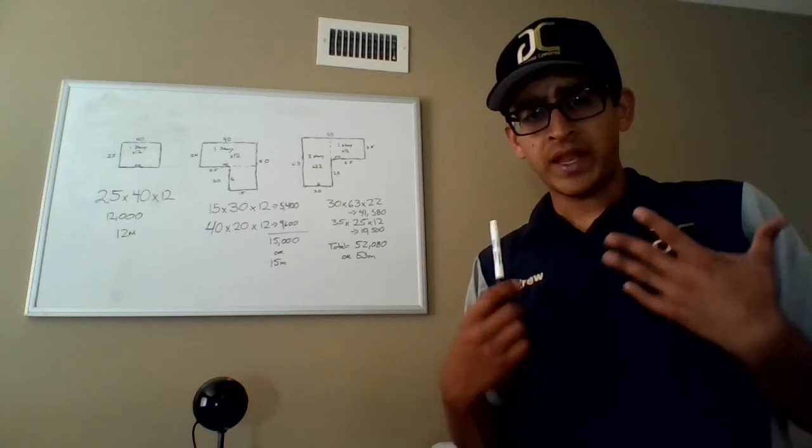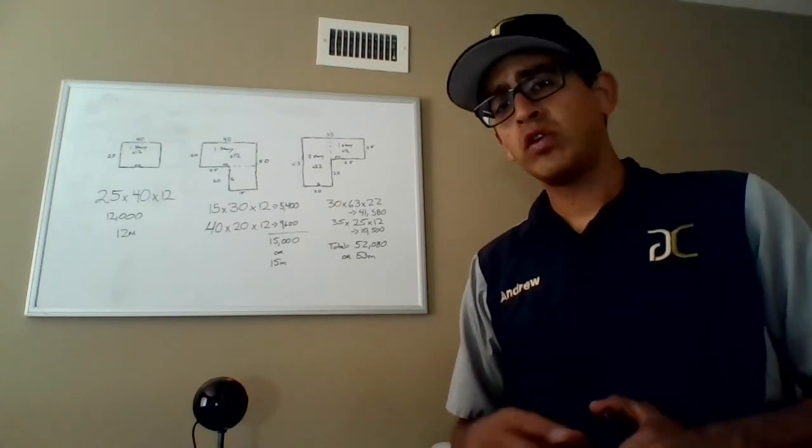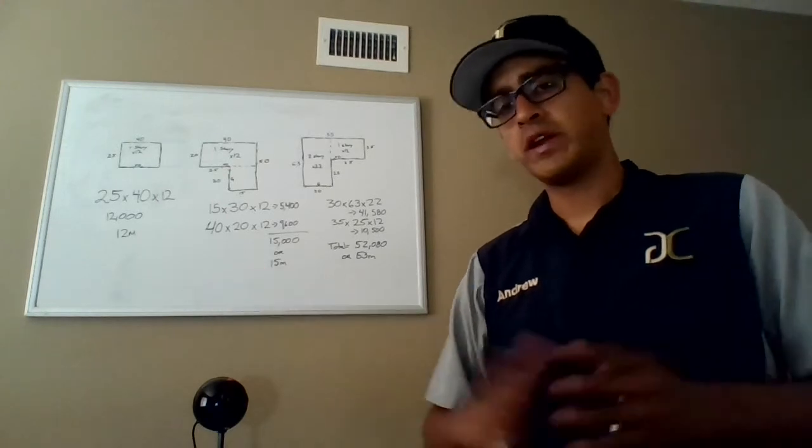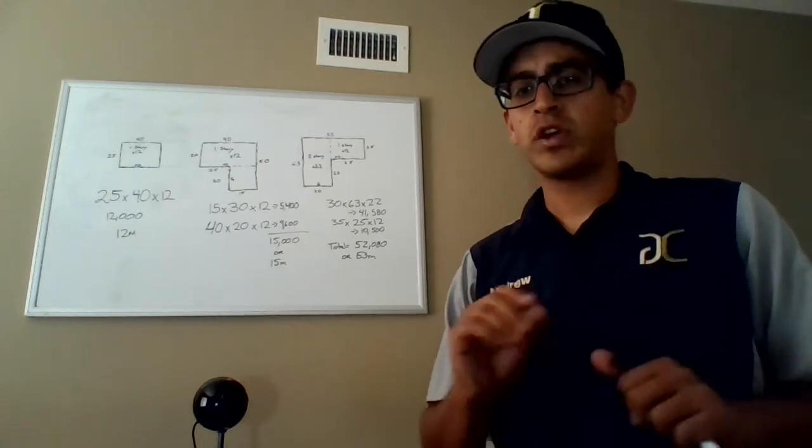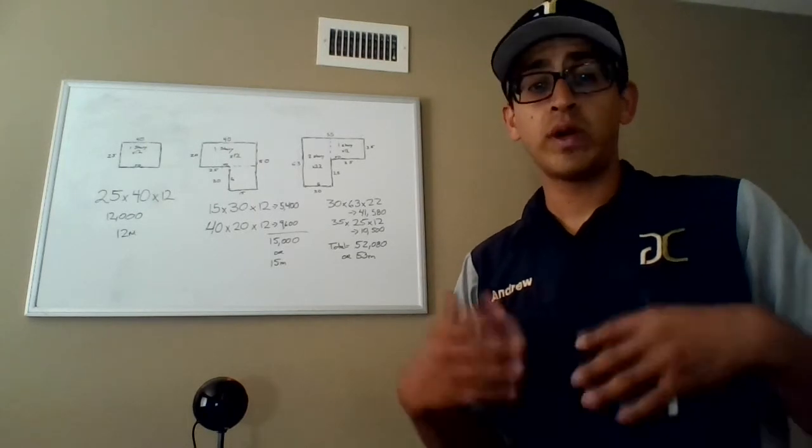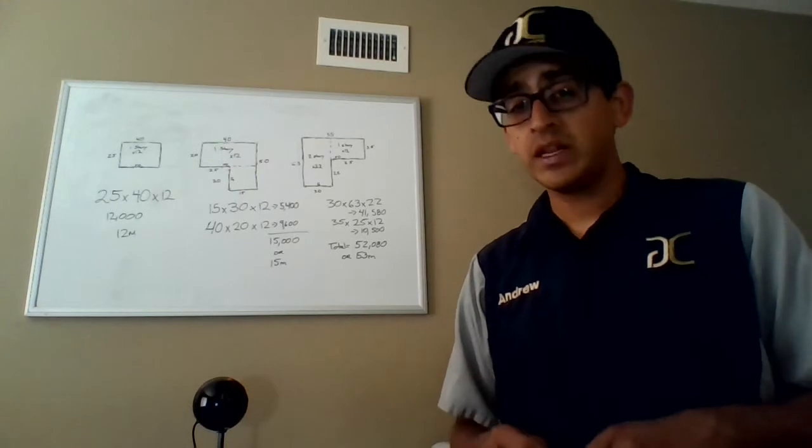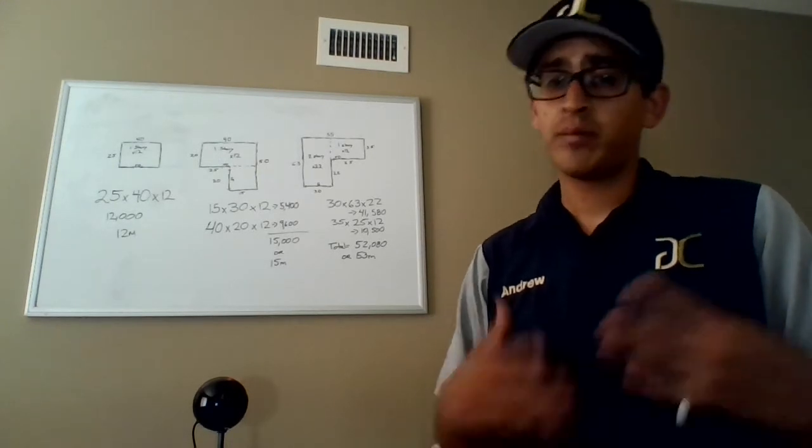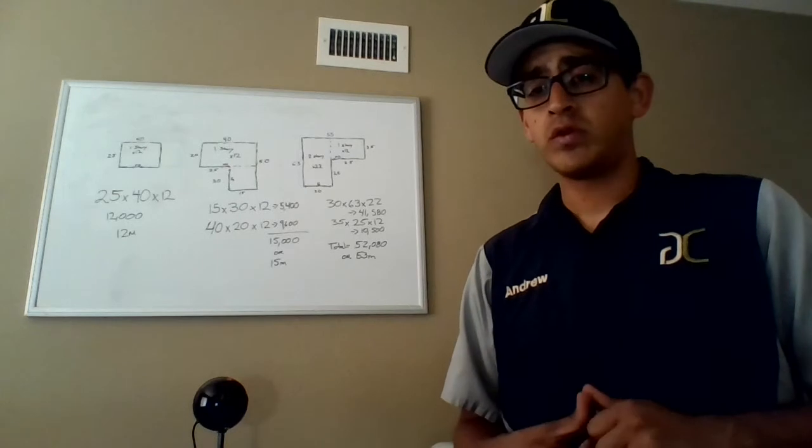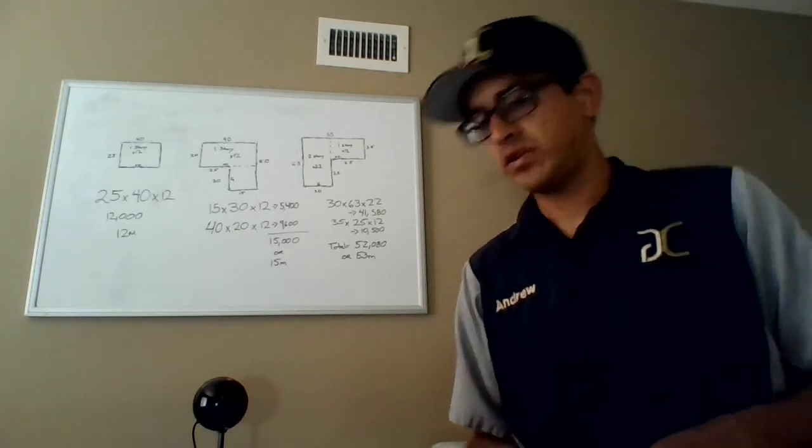So in fumigation terms, if you want to call it, we don't go by thousands. We just call it a 12M. Each thousand cubic feet is considered one M. So that's the way that we use to calculate how much fumigant is going to be needed the day of the fumigation, to calculate the prices for the fumigation. Just something to make it easier on us, I guess.